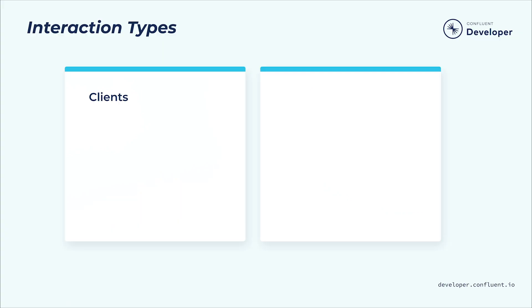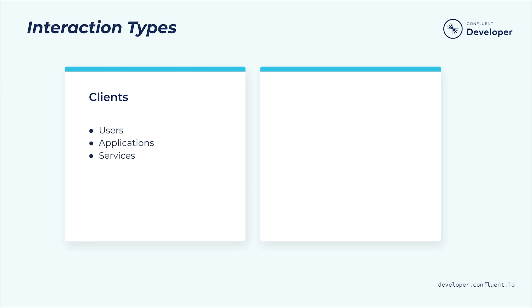There are two types of interaction that you can authenticate with Kafka: clients — whether users, applications, or services — communicating with Kafka brokers, and brokers communicating with other brokers. You can configure authentication for these two types of interaction independently of one another, but the authentication mechanisms you can use are the same for both.